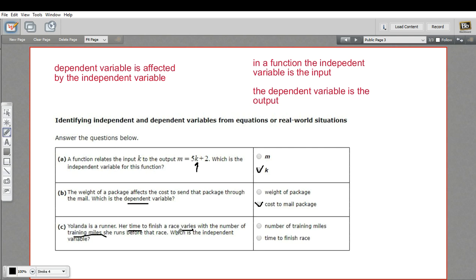So the thing that varies is your dependent variable. So that's your dependent variable. The other thing is the number of training miles, so that's your independent variable. And we're looking for the independent variable here, so that is the number of training miles.